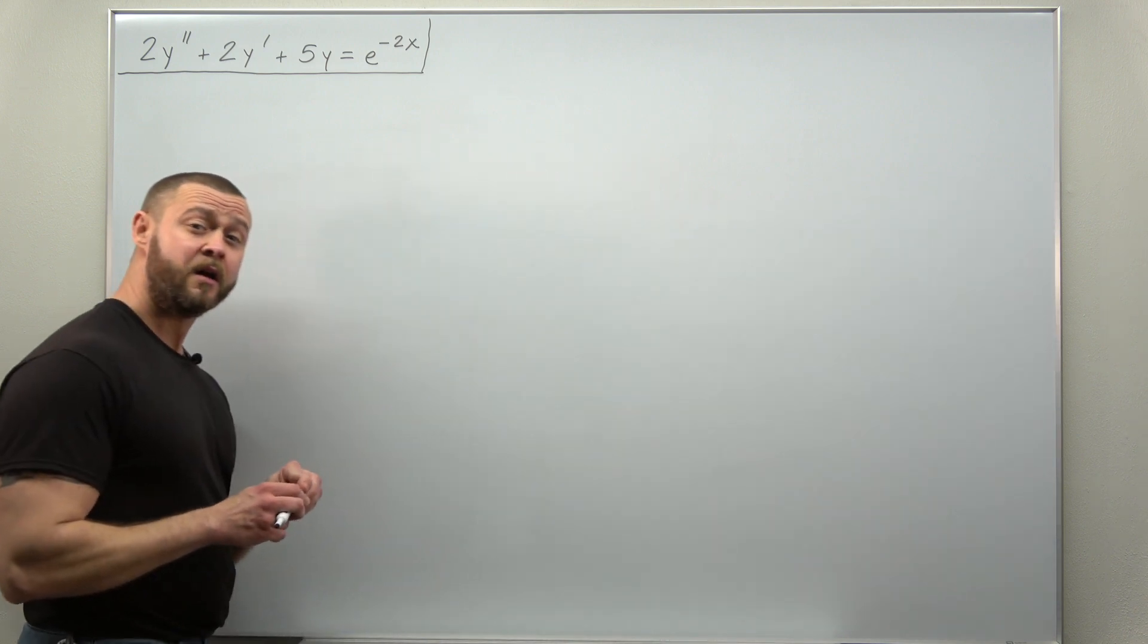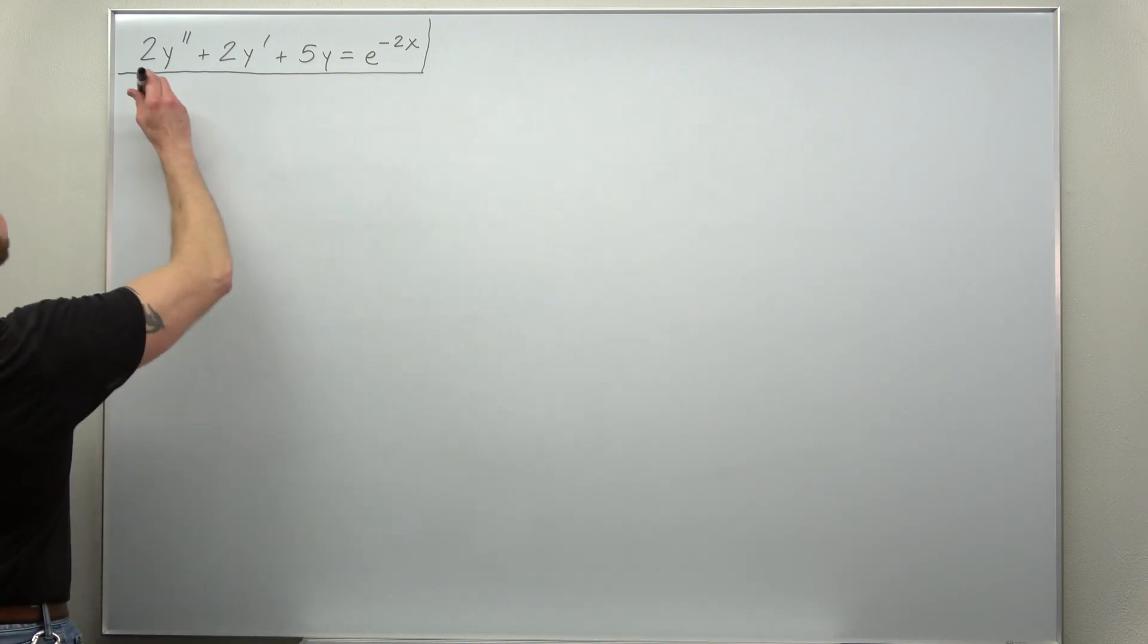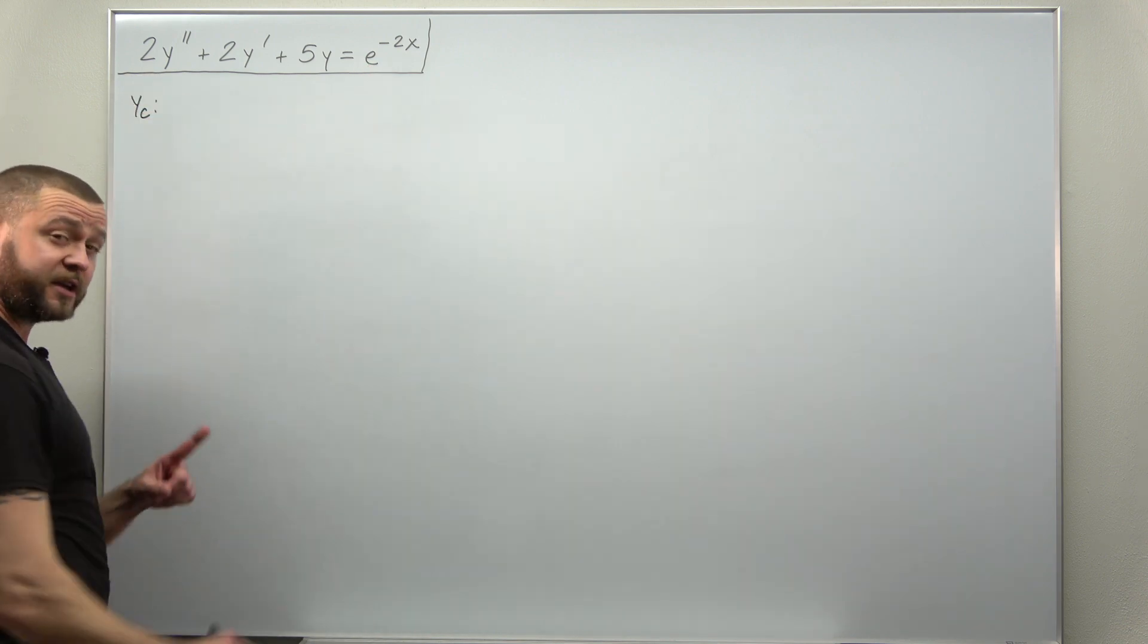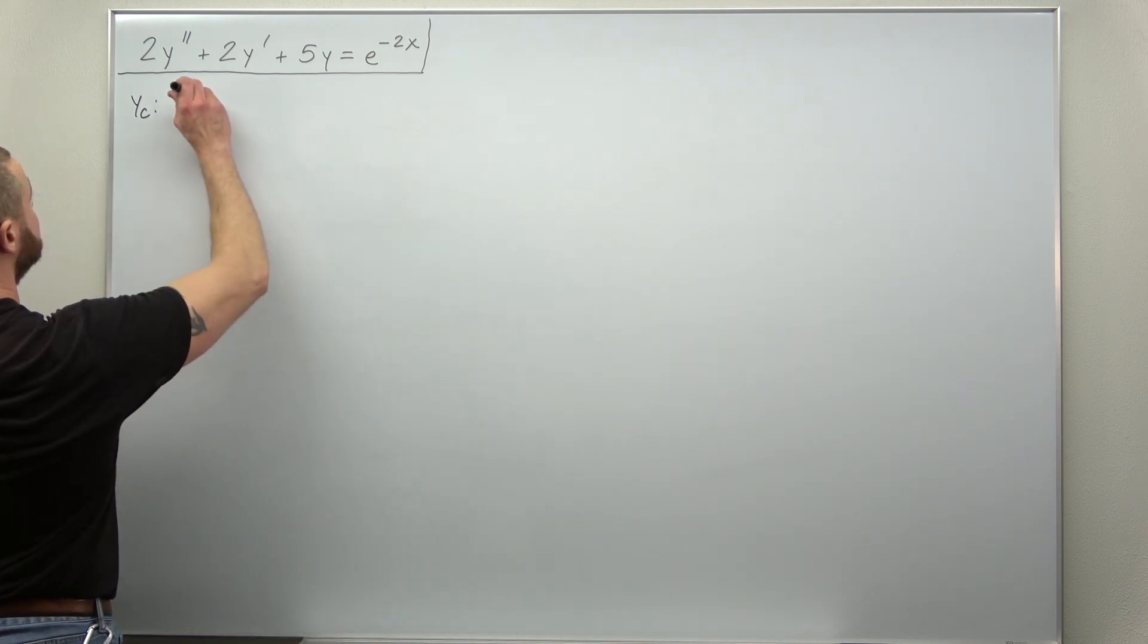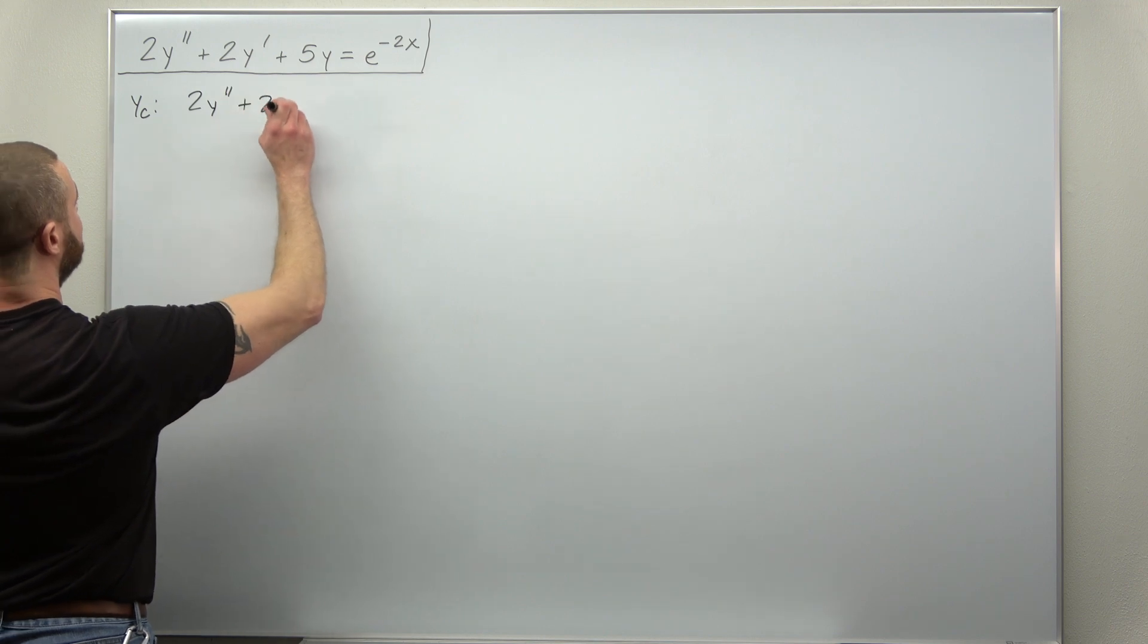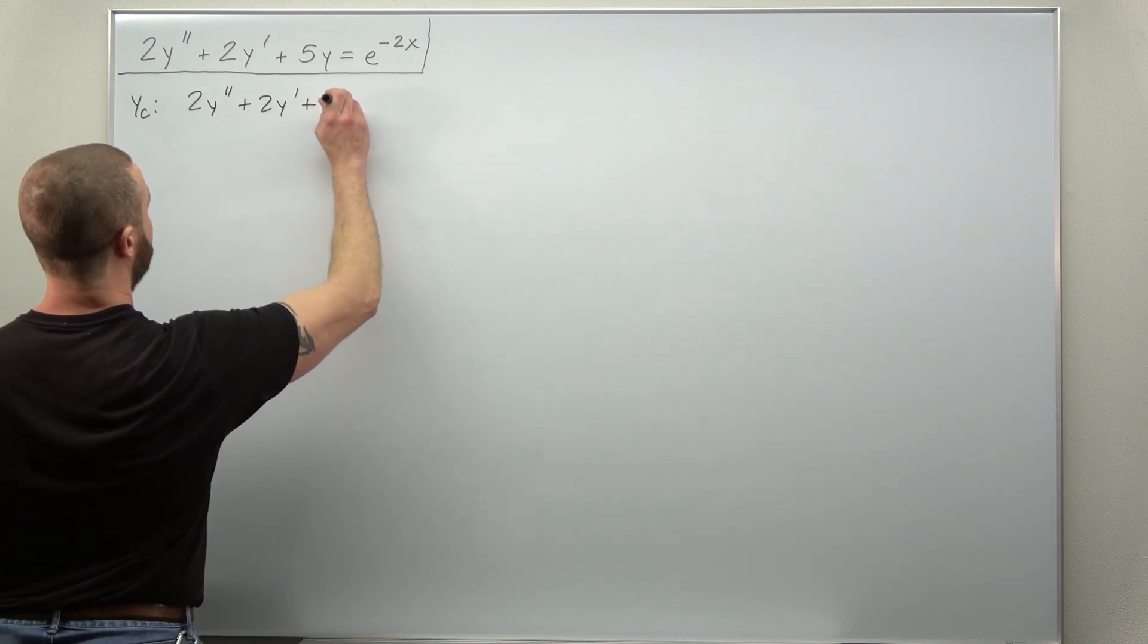Step one, always look for your complementary solution. So to do that, we're going to solve the homogeneous ODE where the right-hand side equals zero. So 2y double prime plus 2y prime plus 5y equals zero.